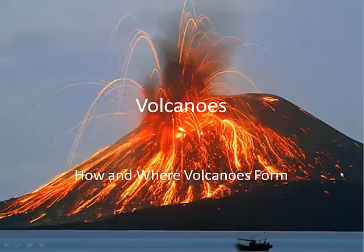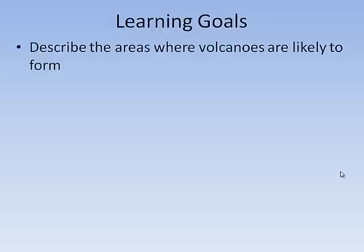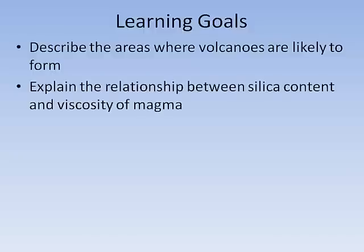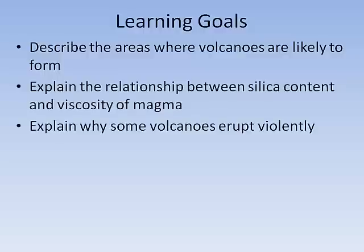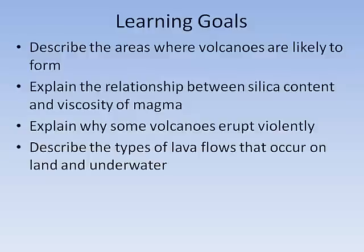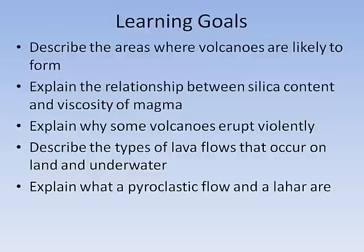Let's talk about volcanoes — where and how they form. Here are our learning goals for today: we're going to describe the areas where volcanoes are likely to form, talk about the relationship between silica content and the viscosity of magma, explain why some volcanoes erupt violently and others erupt gently, describe the types of lava flows that occur on land and underwater, and talk about what a pyroclastic flow and a lahar are.